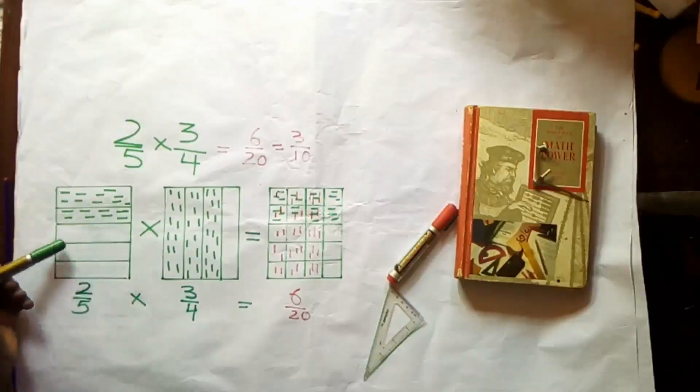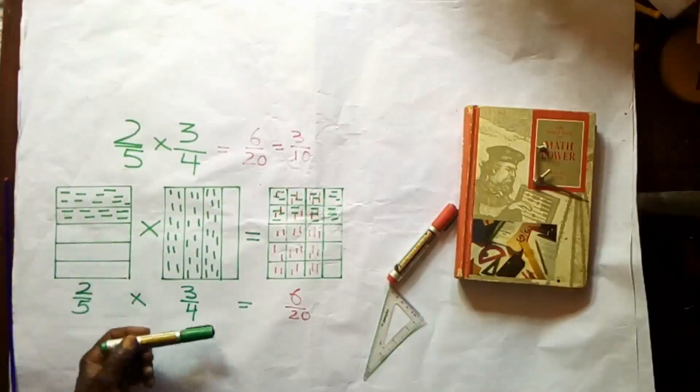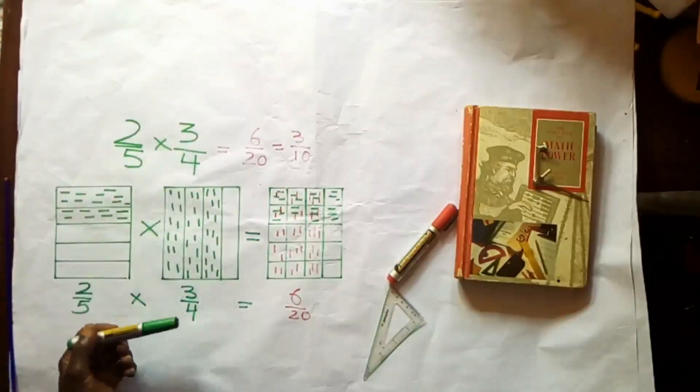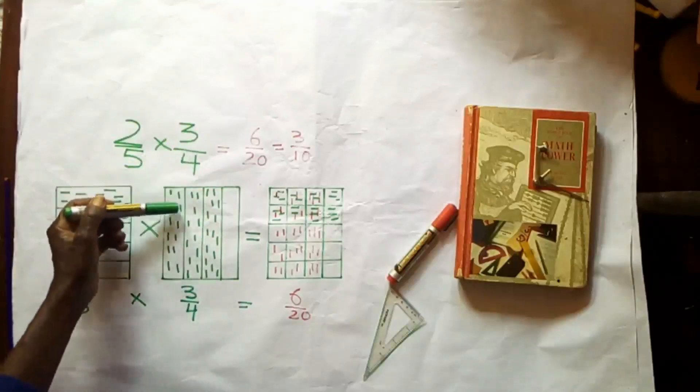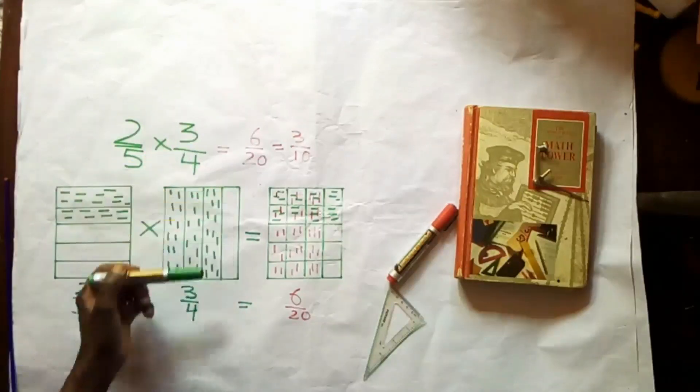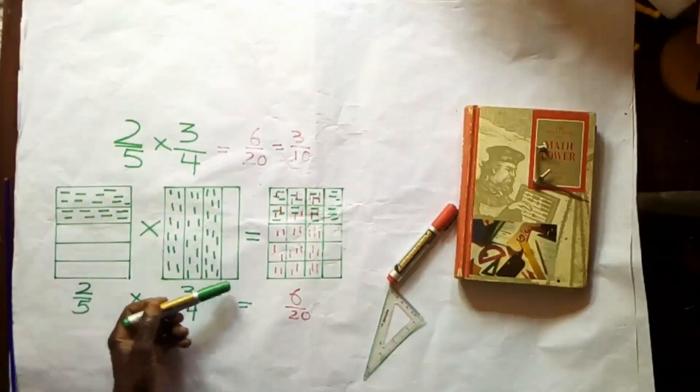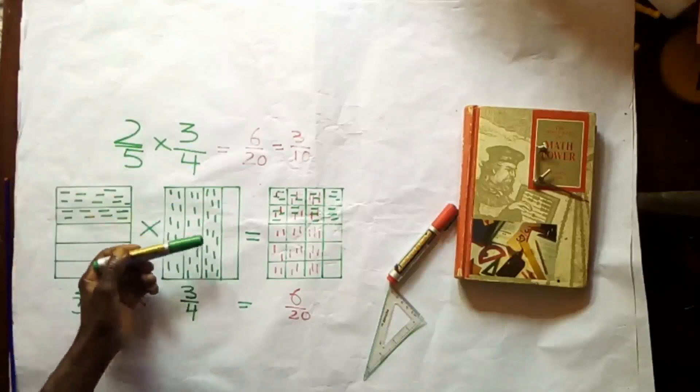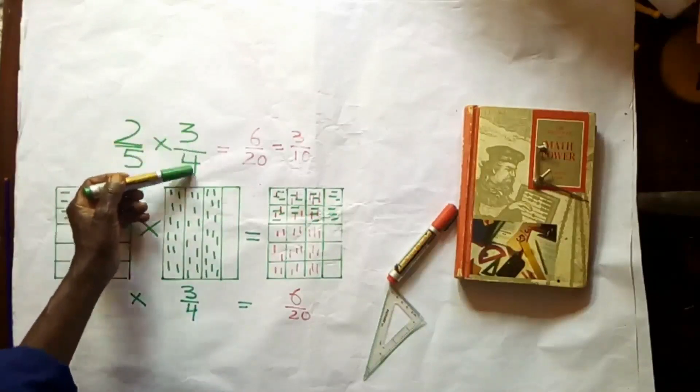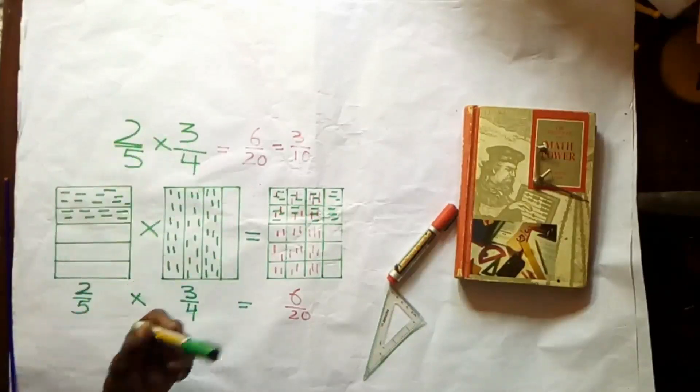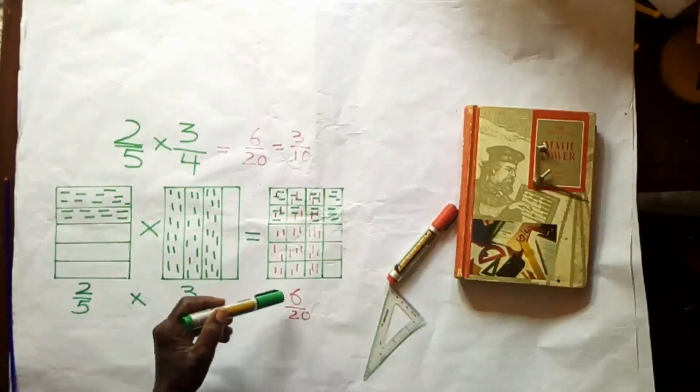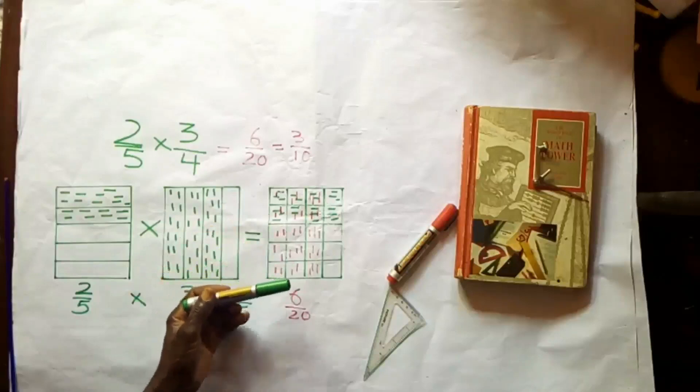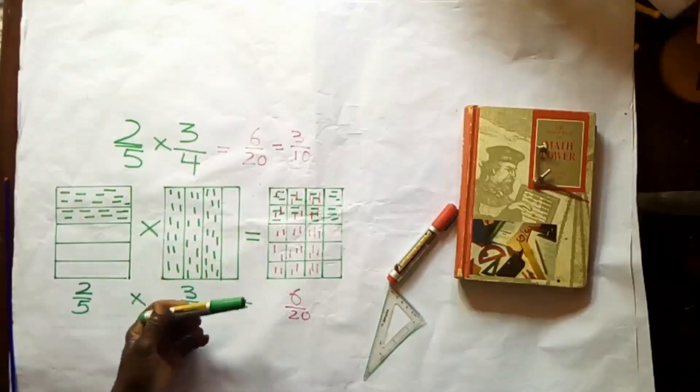Represented 3/4 in terms of columns: 3 columns out of the total number of 4 columns. The product of 2/5 with 3/4, we got as the area of intersection when the columns are superimposed over the rows.